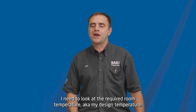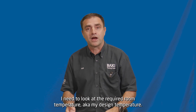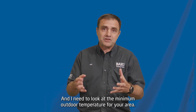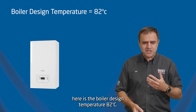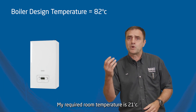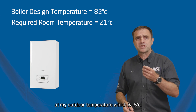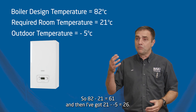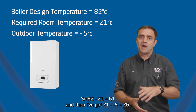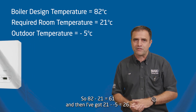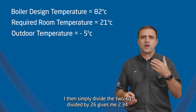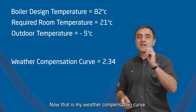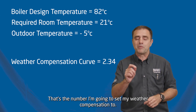I need to look at my boiler flow temperature, the required room temperature — my design temperature — and I need to look at the minimum outdoor temperature, the average outdoor temperature minimum for your area. Could be minus two in London, could be minus six in Scotland. As you can see, we're looking at a boiler design temperature of 82 degrees. My required room temperature is 21, and my outdoor temperature in this case is minus five. So 82 minus 21 gives me 61, and 21 minus minus five gives me 26. I then simply divide the two: 61 divided by 26 gives me a number of 2.34. That is my weather compensation curve — that's the number I'm going to set my weather comp to.